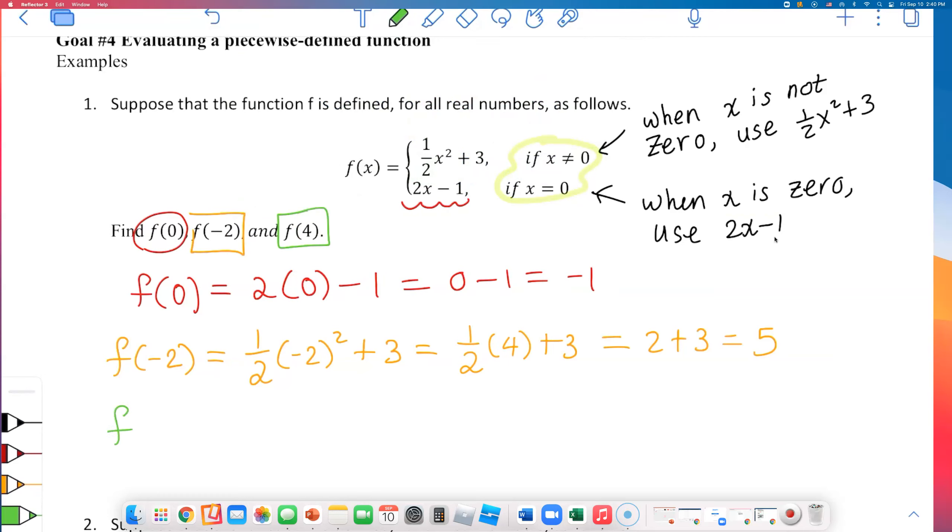How about the last one? It says find f of 4. Well, 4 is definitely not 0, so I'm going to have to use this top piece again. Half of 4 squared plus 3. 4 squared is 16, and half of 16 is 8. If you do 8 plus 3, you will get 11. So the final answer is 11.